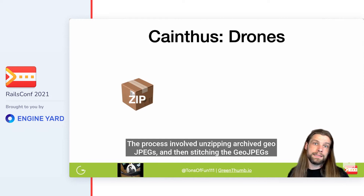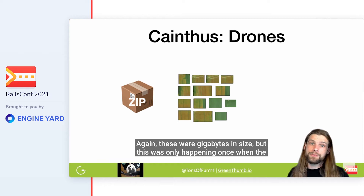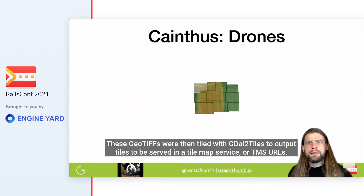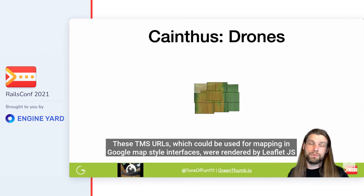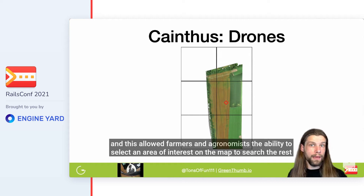The process involved unzipping archived GeoJPEGs and then stitching them into a giant mosaic GeoTIFF. Again, these were gigabytes in size, but this was only happening once when the flight data was imported into the system. These GeoTIFFs were then tiled with gdal2tiles to output tiles served in a tile map service, or TMS URLs. These TMS URLs could be used for mapping in Google Maps-style interfaces and were rendered by Leaflet.js, allowing farmers and agronomists to select an area of interest on the map to search the rest of the field for similarity.